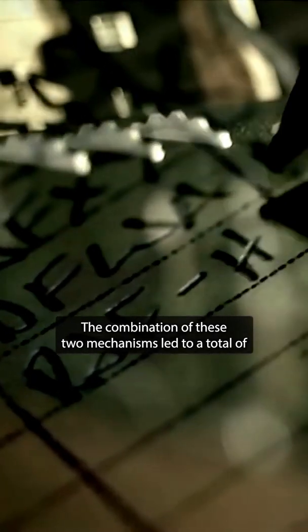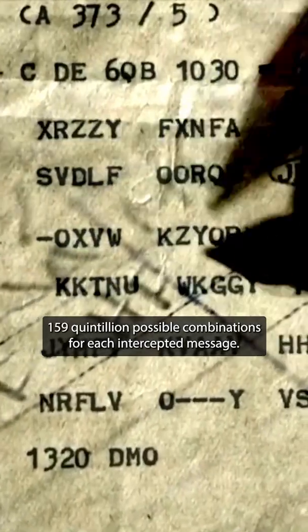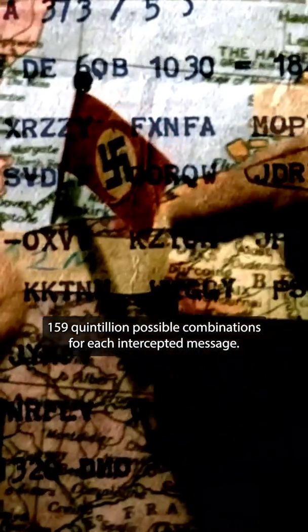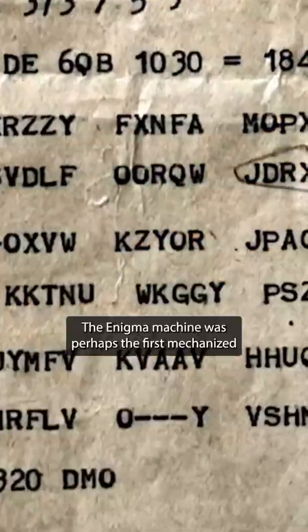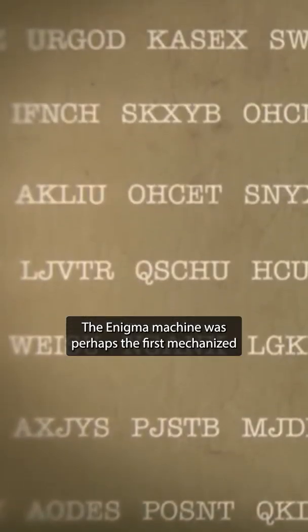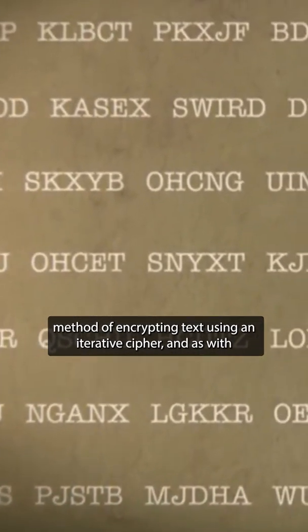The combination of these two mechanisms led to a total of 159 quintillion possible combinations for each intercepted message. The Enigma machine was perhaps the first mechanized method of encrypting text using an iterative cipher.